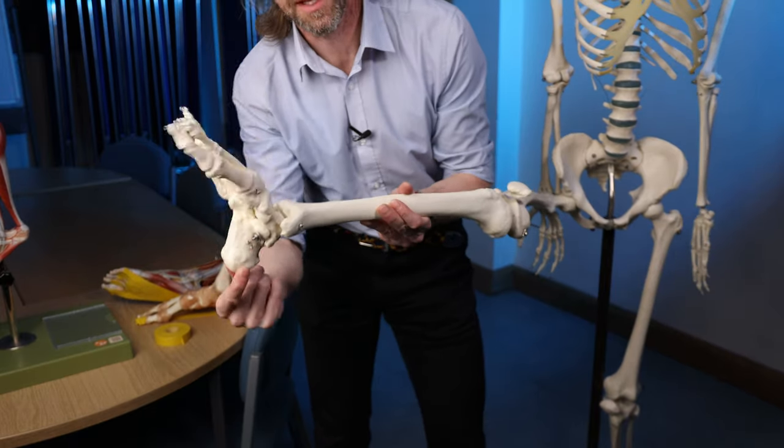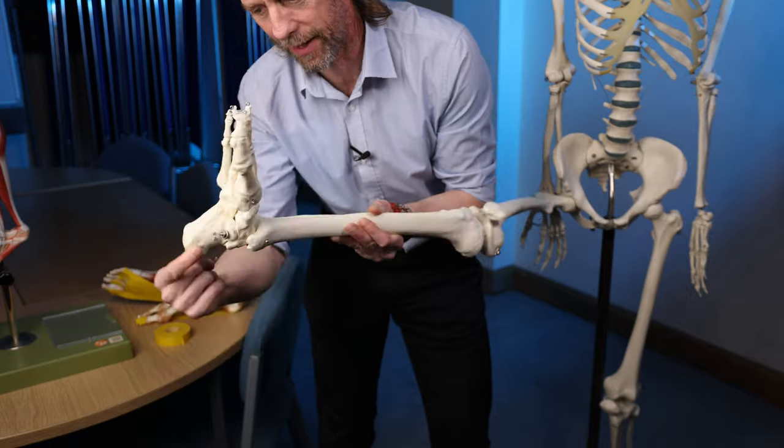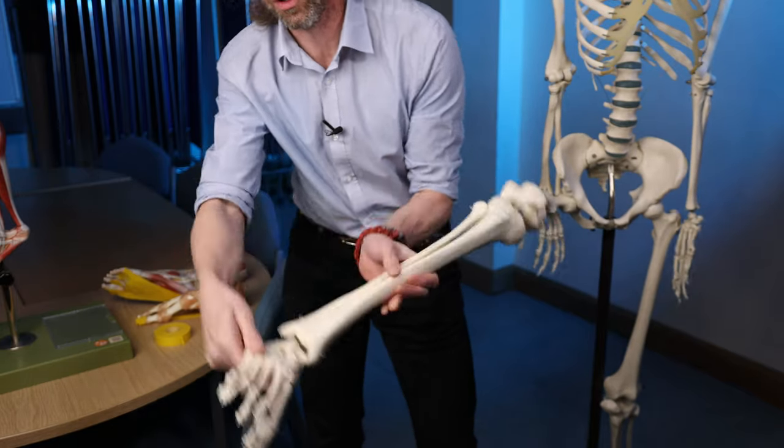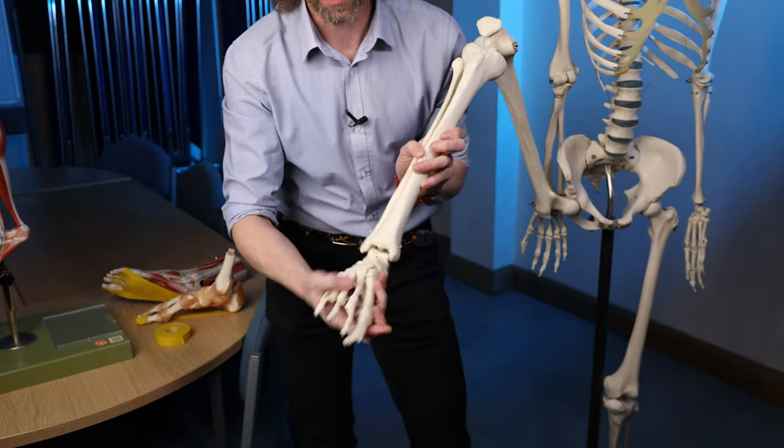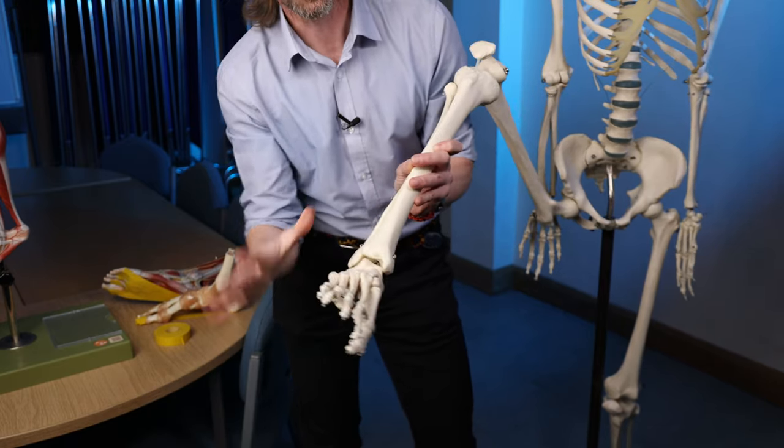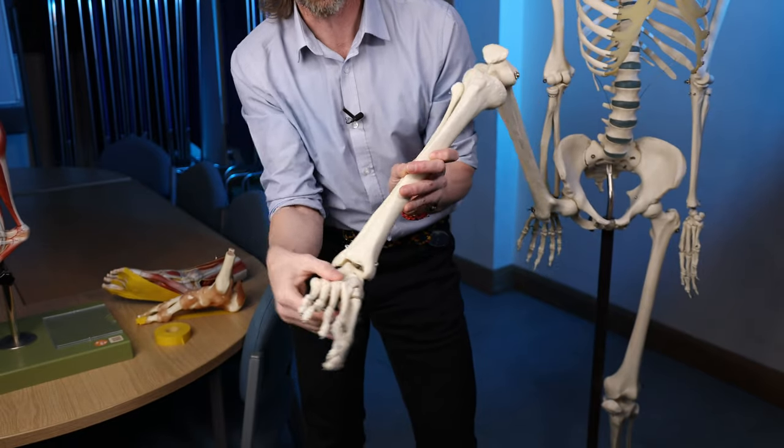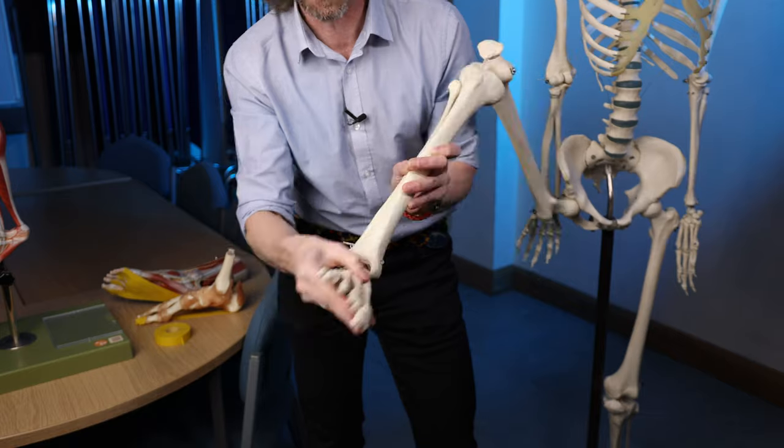Here's that calcaneus there. Sure we've got an ankle that can dorsiflex and plantar flex, but we've also got lots of slidey roundy joints in here. This is a very mobile structure just like the hand and the wrist are very mobile.